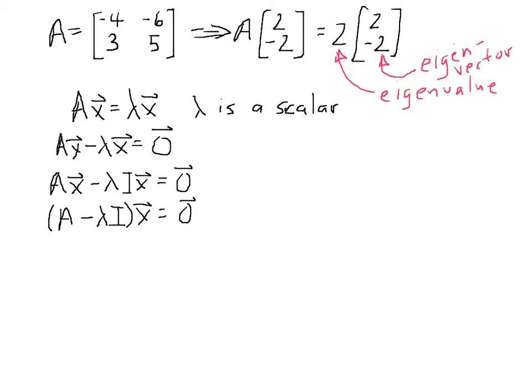So this A minus lambda I is a matrix in its own right. We could think of it as perhaps a matrix B. And so what we have then is we have that B x equals 0. Now what we know about this is that 0 is a solution for sure. But that's a trivial solution. It's not very interesting to us.